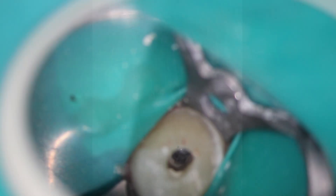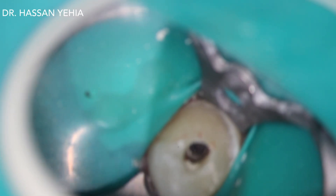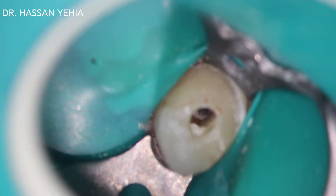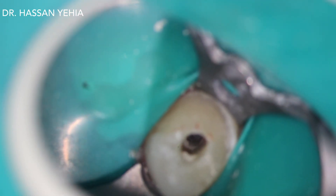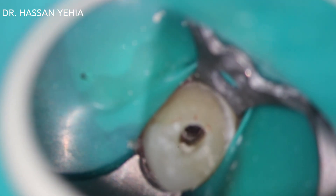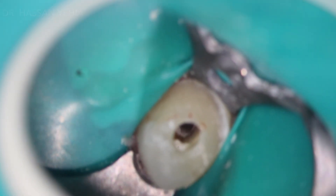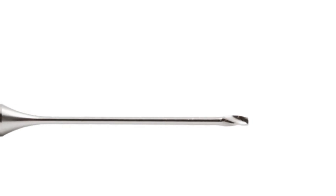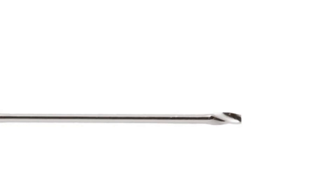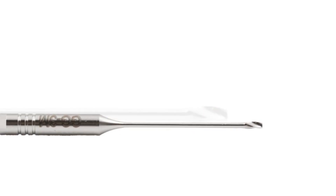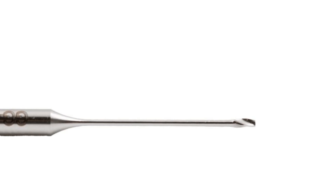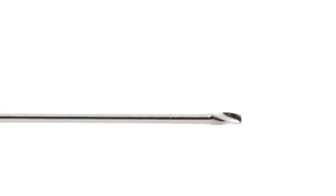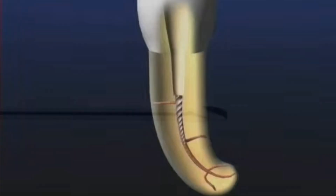The very first step is I must be able to visualize the file. To achieve that I start with a modified Gates Glidden and work my way to the level of the file. This is an image of what a modified Gates Glidden looks like — basically you flare out the very tip of the bur so that it's safer to cut when you're going down the canal.